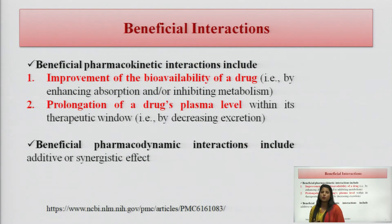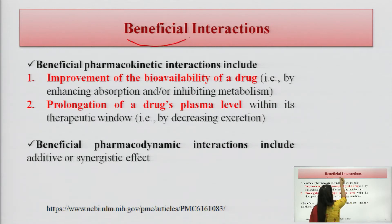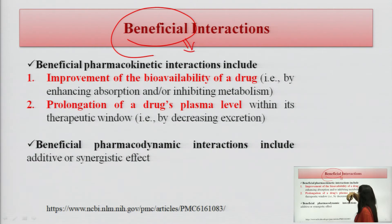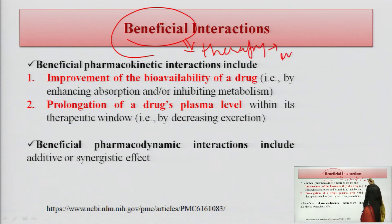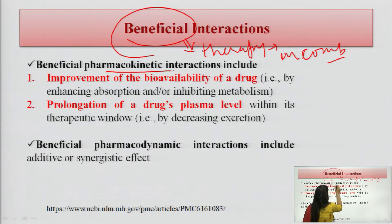Sometimes, when two drugs or a drug is interacting with any substance, the result of the interaction is beneficial. We want these types of interactions, and in the prescribing pattern, we use them as part of therapy in a combination form. Beneficial interactions include pharmacokinetic interactions and beneficial pharmacodynamic interactions. In pharmacokinetic beneficial interactions, there is improvement of the bioavailability of the drug, and prolongation of drug plasma levels.